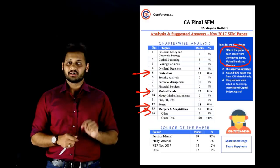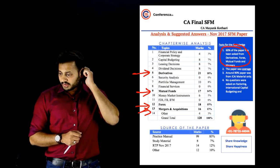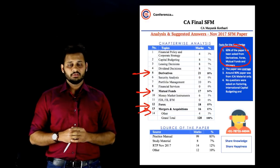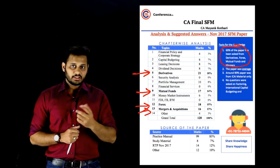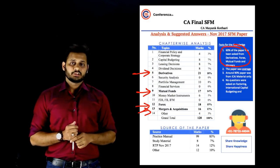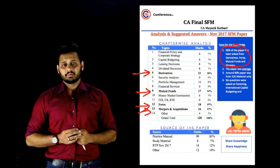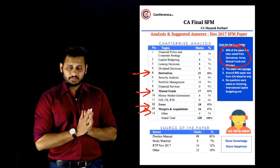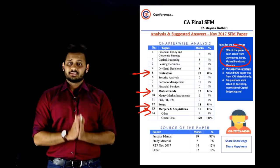RTP contributed 14 marks. This is from the current RTP. One was the Derivative Bank question and one was the Wonderland question, which involved the minimum time for break-even. So, 8 marks from Study Material and 14 marks from RTP — this was the analysis.